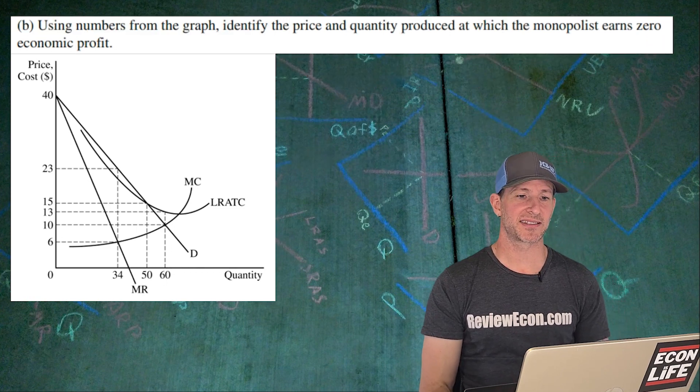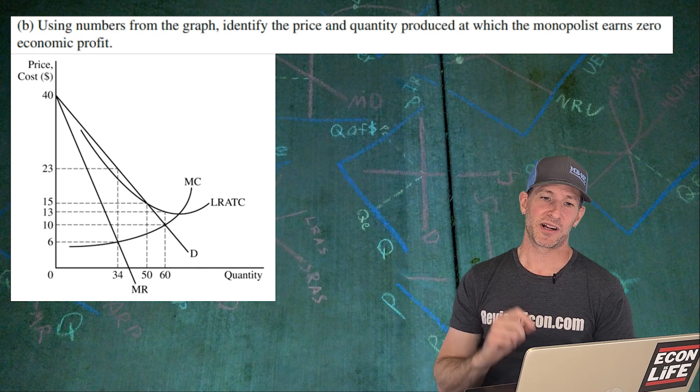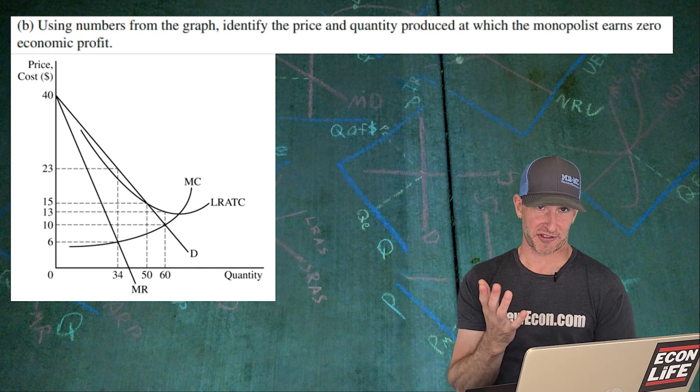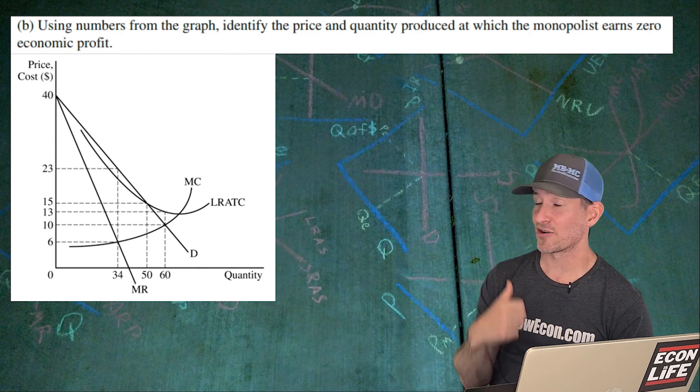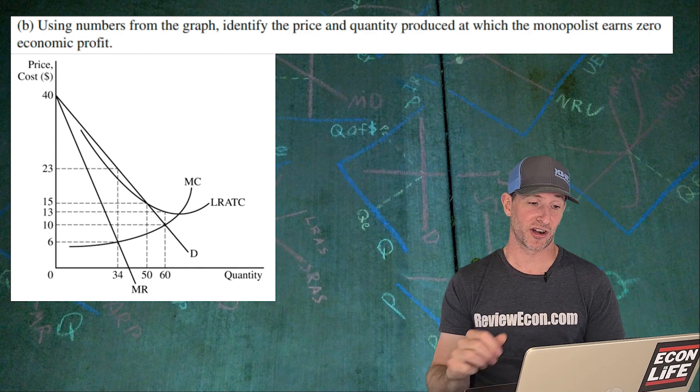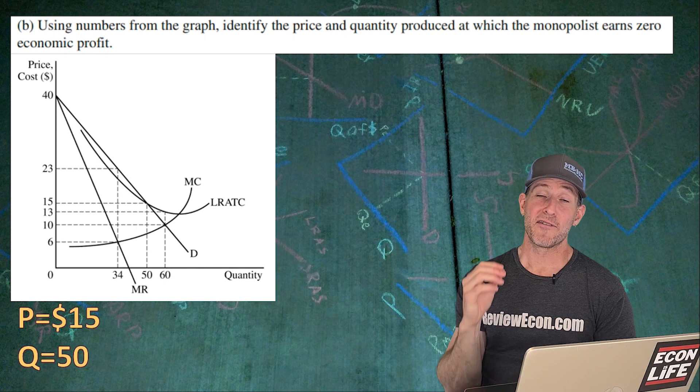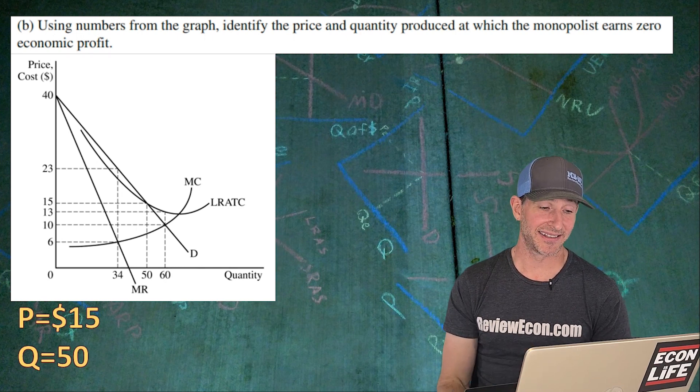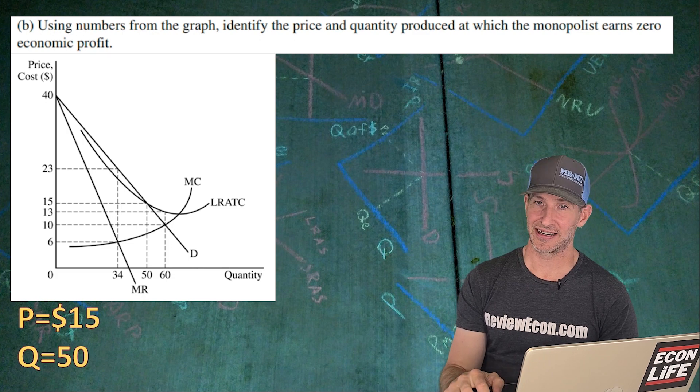Using numbers from the graph, identify the price and quantity produced at which the monopolist earns zero economic profit. The break-even price, also called fair return price, is where that long run average total cost intersects the demand curve. And that is at 50 units. And the price there, the demand curve price is $15 there.